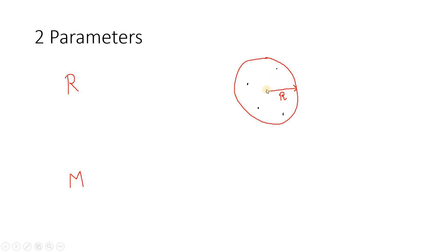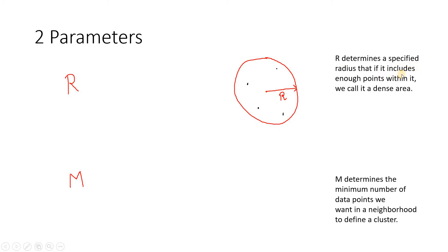Consider this situation: within a particular radius r, including our point of interest, there are total 1, 2, 3, 4, 5 — five data points present. If we set r equal to 2 and n equal to 5 (considering our original data point), we consider all four neighboring data points as neighbors of this particular point. So r determines a specified radius — if it includes enough points within it, we call it a dense area. r controls the total area within which we consider the number of data points to conclude whether the area is dense or non-dense.